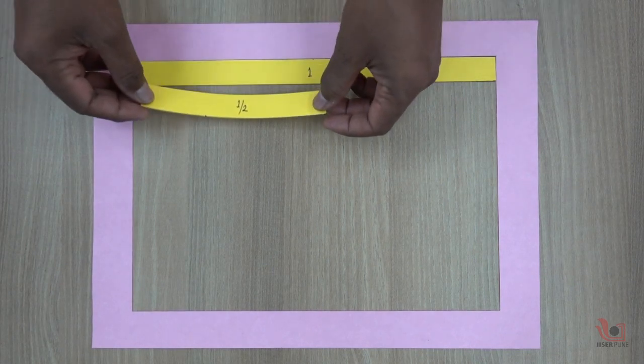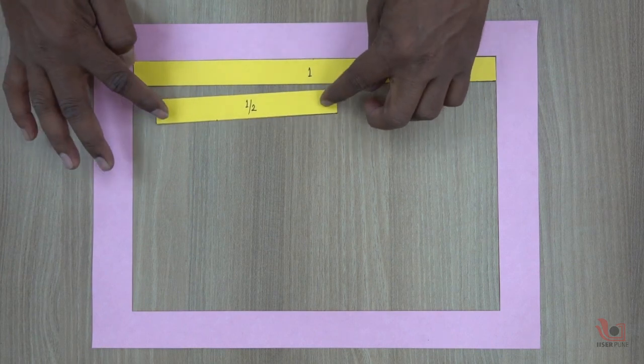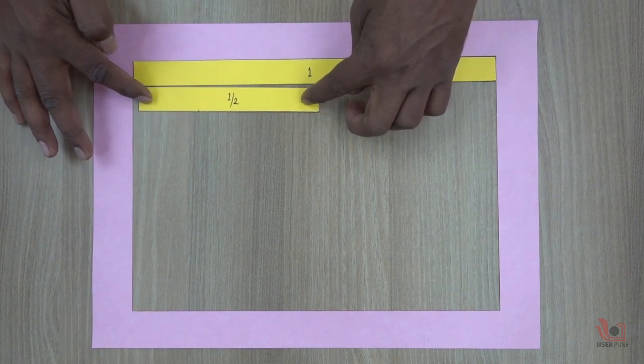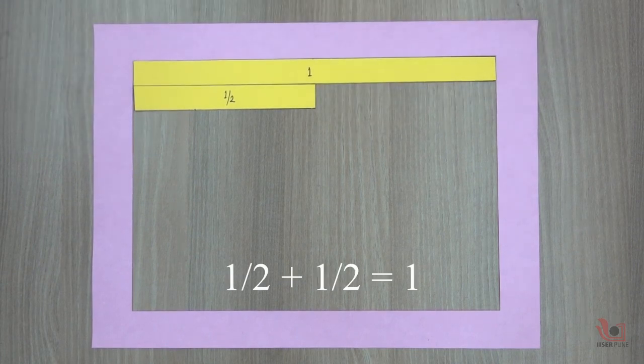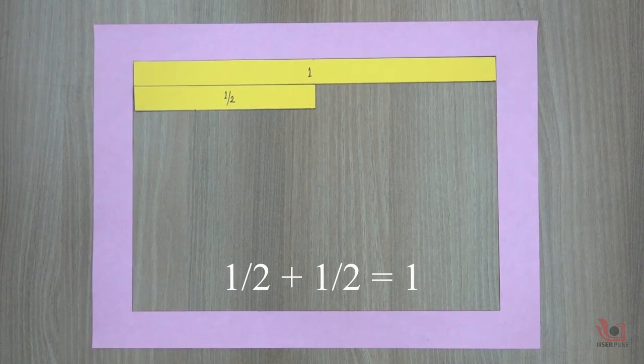Now, take 2 half strips and place them just below the single strip. Here, you can see that if you add 2 halves, you will get 1 whole strip.